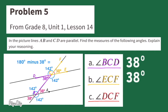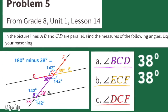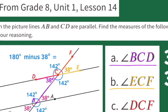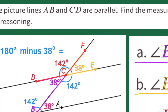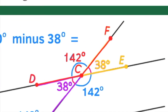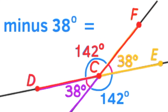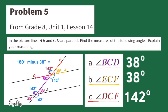Part C: What is the measure of angle DCF? Find the angle and you'll find its measure. The measure of angle DCF is 142 degrees.